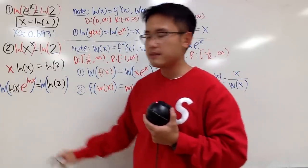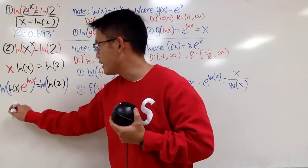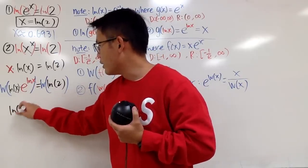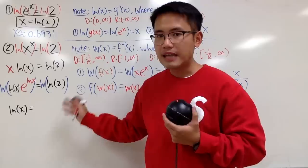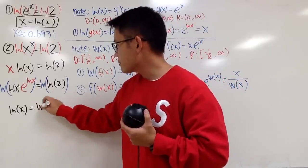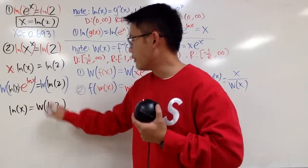And, on the right-hand side, you get w of natural log of 2, like that.